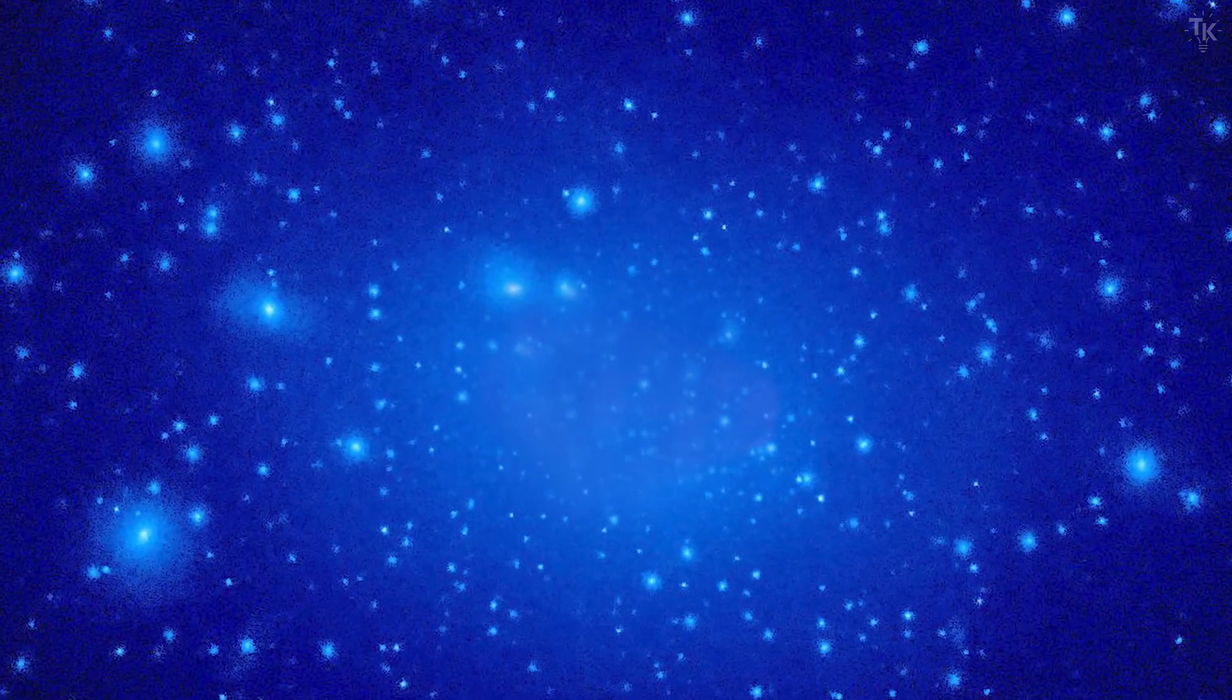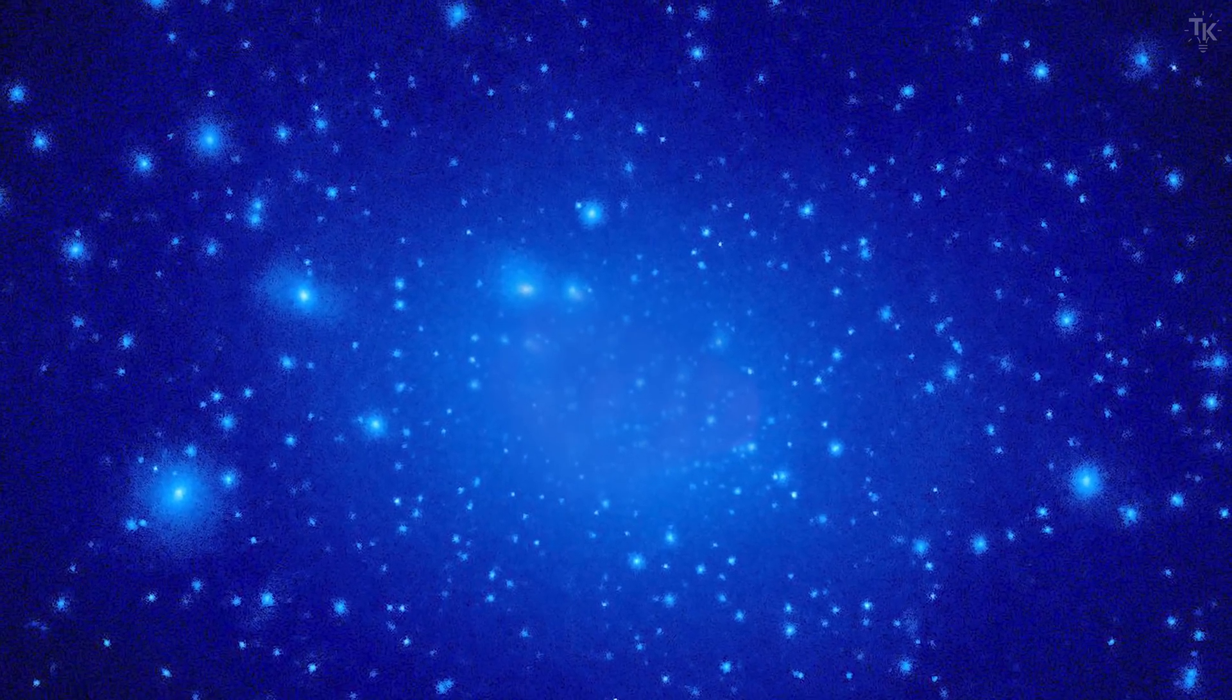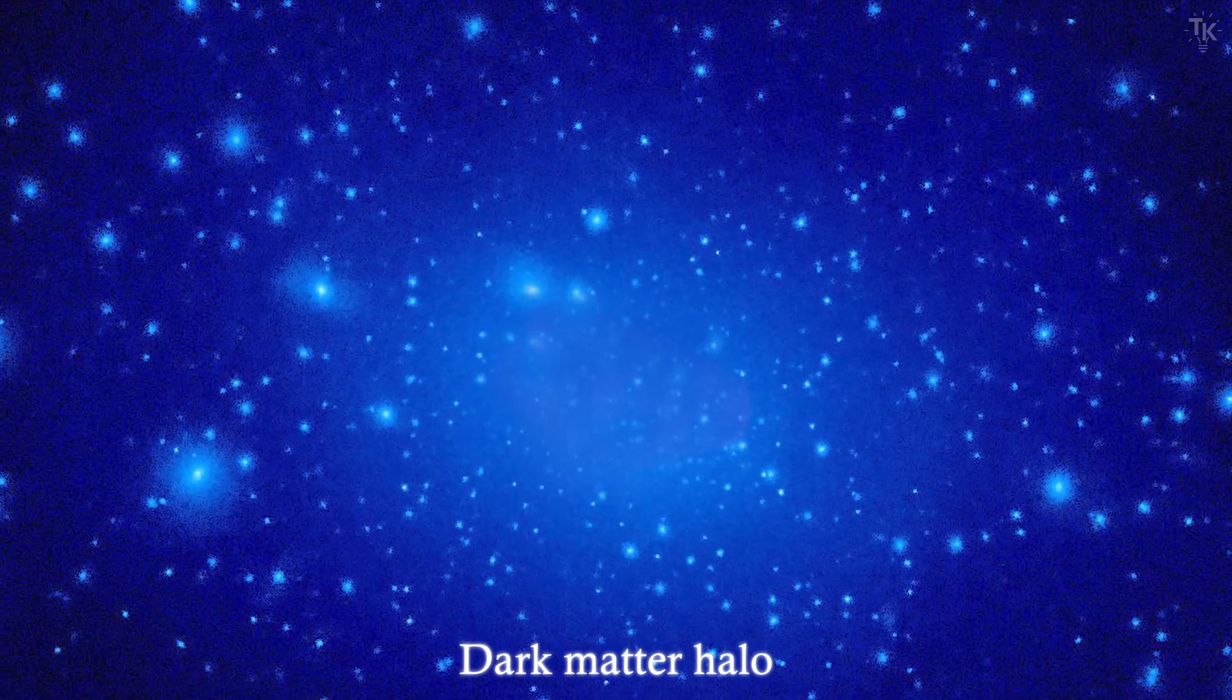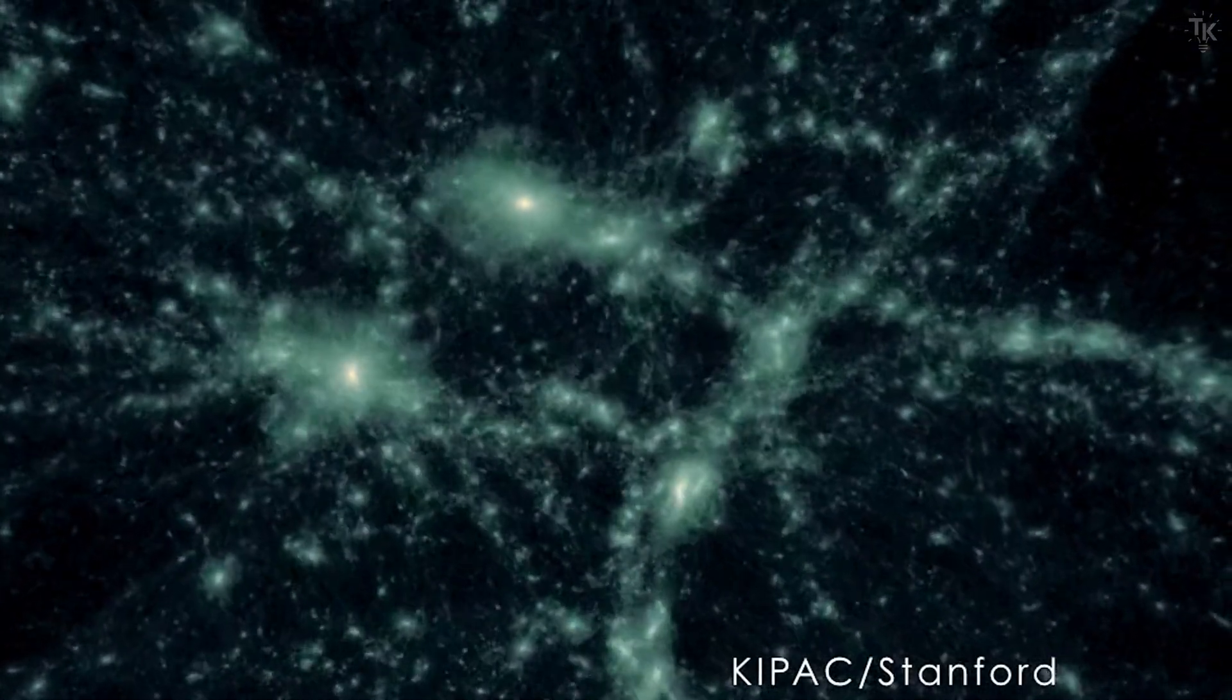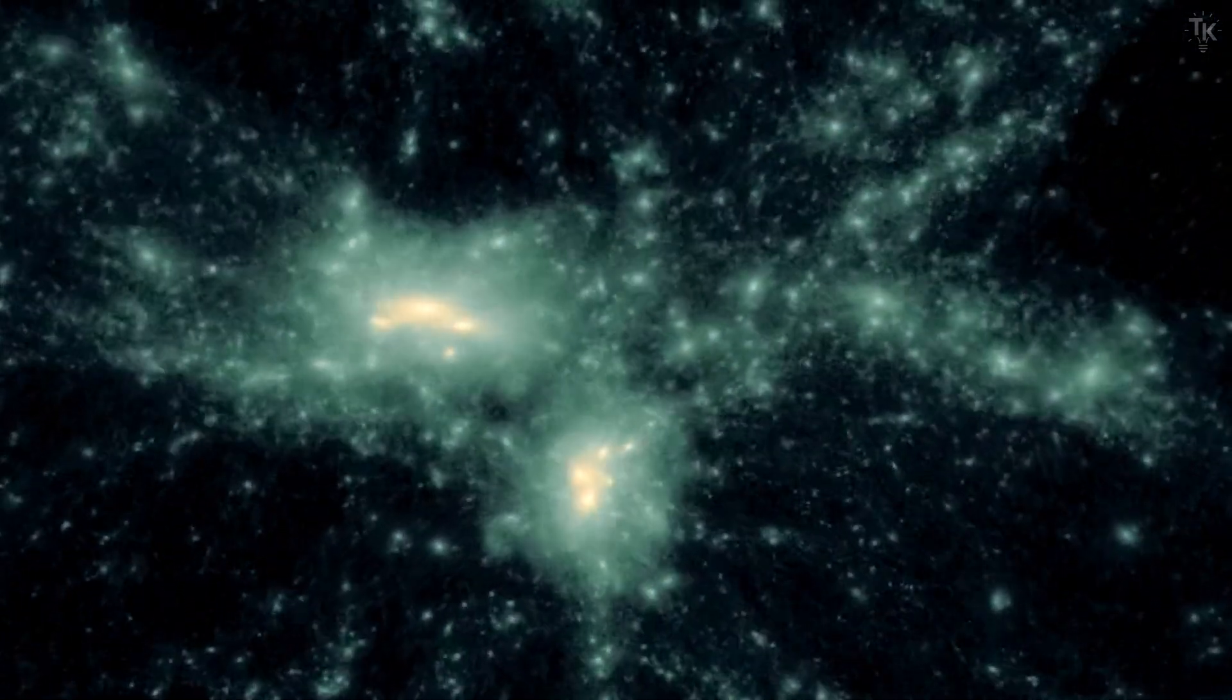Looking at larger regions, there were also massive clumps of dark matter. These are called dark matter halos. The gravity of dark matter halos pulled in stars and gas. Thus, giant galaxies were formed.